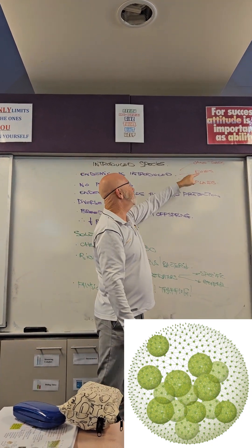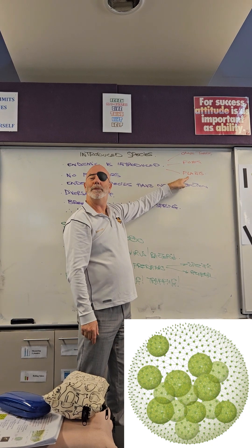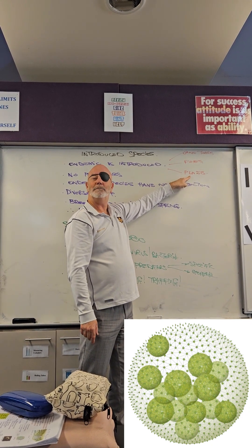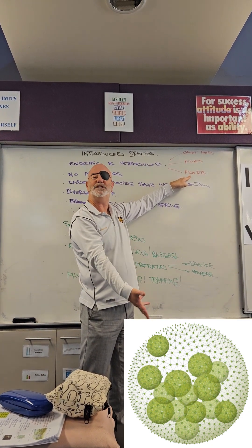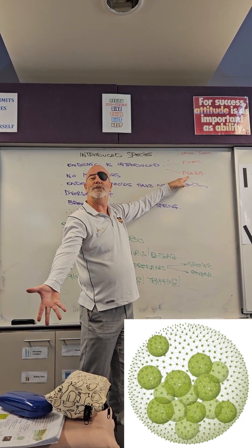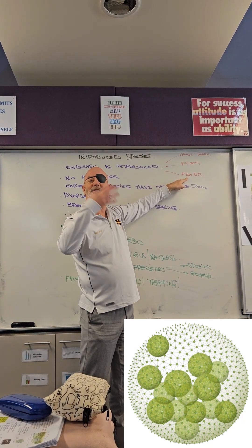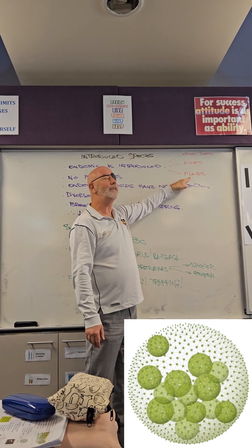Some examples are the cane toads, foxes, and then some plants that people put in their fish tanks and they tip the fish and the fish tanks into the natural waterways and the plants take over the ecosystem.